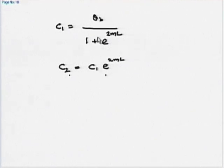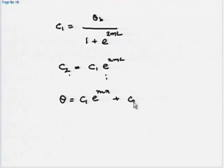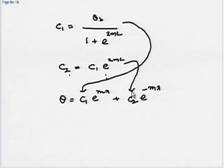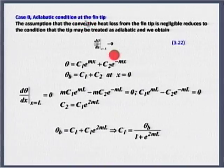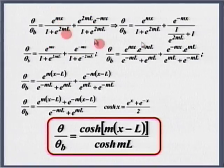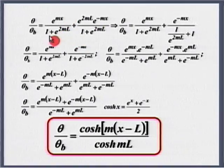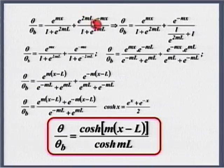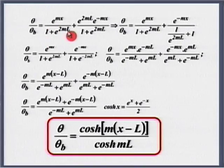Once we have C₁ and C₂, the temperature distribution is θ = C₁e^(mx) + C₂e^(−mx). Substituting: θ/θ_b = e^(mx)/(1 + e^(2mL)) + e^(2mL)·e^(−mx)/(1 + e^(2mL)). C₁ = 1/(1 + e^(2mL)) and C₂ = e^(2mL)/(1 + e^(2mL)), with θ_b common on both sides.